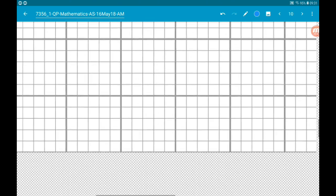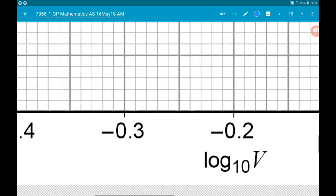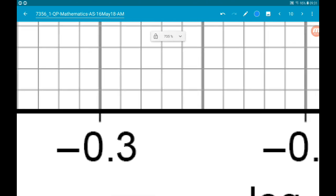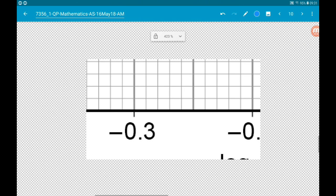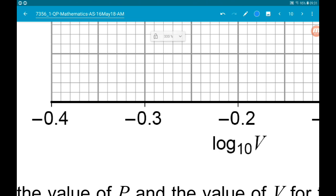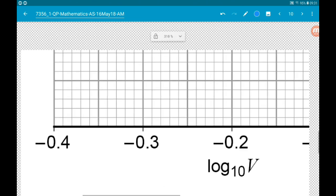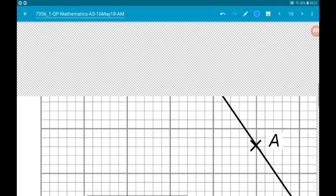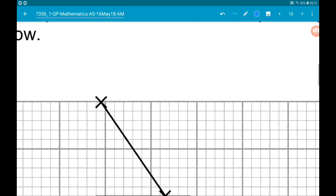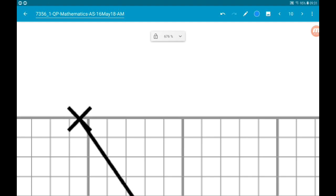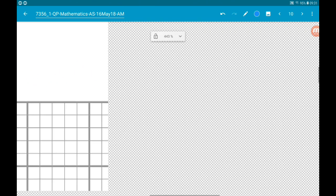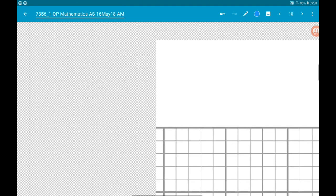And then the other point we're going to use is this chap up here. Now he's sat in the middle of one of the tiny little squares. If we go down, it's just to the left of minus 0.03. Every little square is 0.01, so the x-coordinate of this chap is minus 0.305 and the y-coordinate is 2.4.